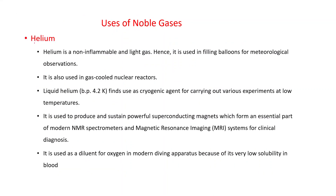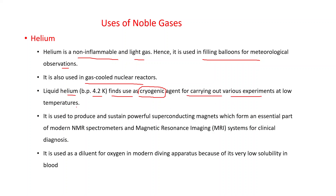Usage of noble gases. First, we will discuss the use of helium. Helium is a non-inflammable and light gas, hence it is used in filling balloons for meteorological observations. It is also used in gas-cooled nuclear reactors. Liquid helium, boiling point 4.2 Kelvin, finds use as a cryogenic — for carrying out various experiments at low temperatures. It is used to produce and sustain powerful superconducting magnets, which form an essential part of modern NMR spectrometers and magnetic resonance imaging (MRI) systems for clinical diagnosis. NMR stands for nuclear magnetic resonance.